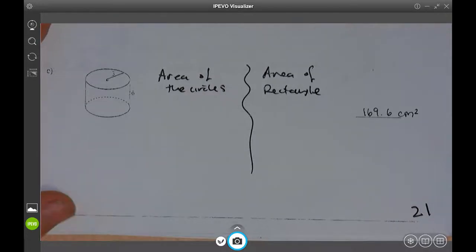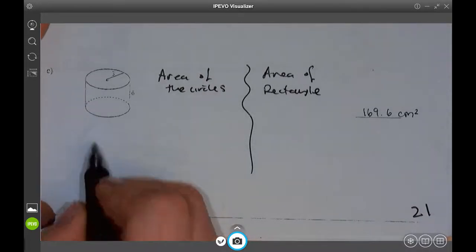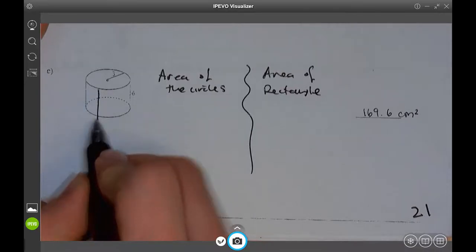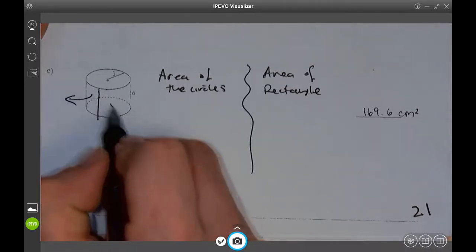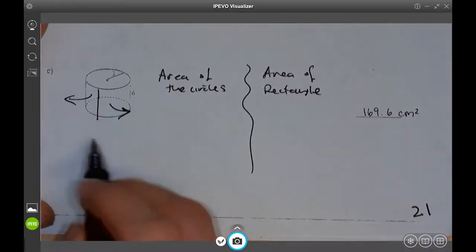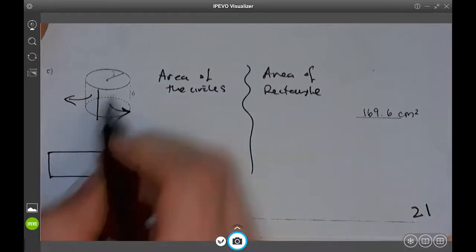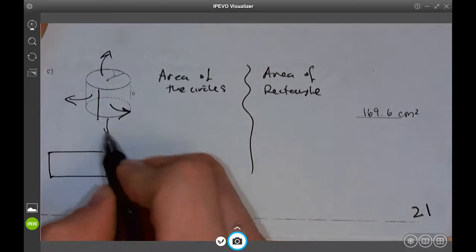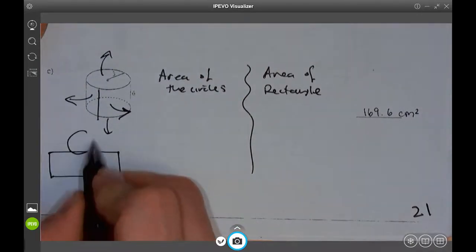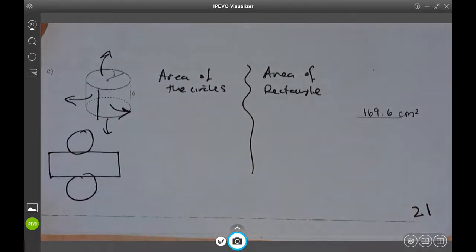Well, what happens when you make a net of this thing is if you take this and cut it and open it up, what's going to happen is this is going to unfold into a rectangle. This part will flap up and that part will flap down. So you're going to have a net that's going to look something like this.